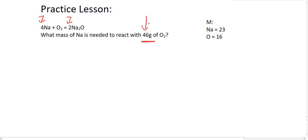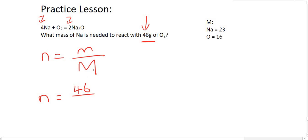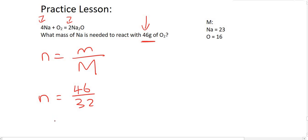They've given us the mass of oxygen, so we can use the formula n = M/Mm to work out the moles of oxygen. That's going to be its mass, which is 46, over its molar mass. The molar mass is from the periodic table — for O₂ it's 16 plus 16, which is 32. That gives us a value of 1.4375 moles.